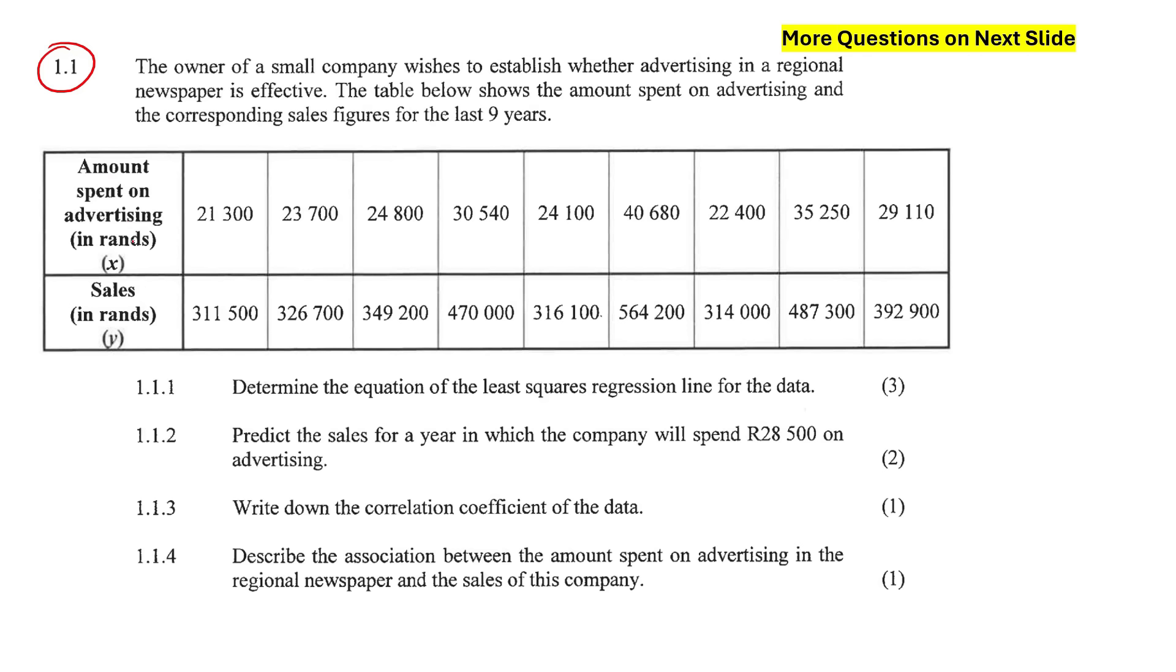We've got the amount spent on advertising in rands, and then this is how many sales they made. So what they're doing is they're spending money. This is what businesses do in real life. You spend money to advertise, and then from the advertising, they want to see how many sales did they get. For example, when they spent 21,000 rand on advertising, they made 311,000 rand in sales. When they spent 40,000 rand, then they made a lot more money on sales.